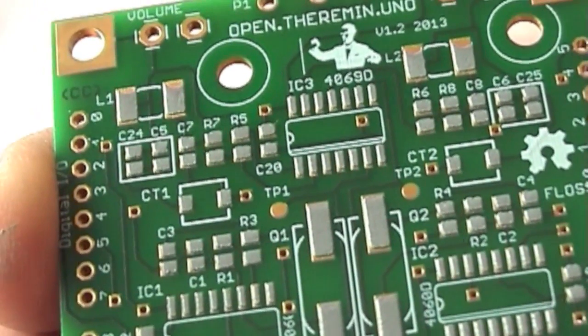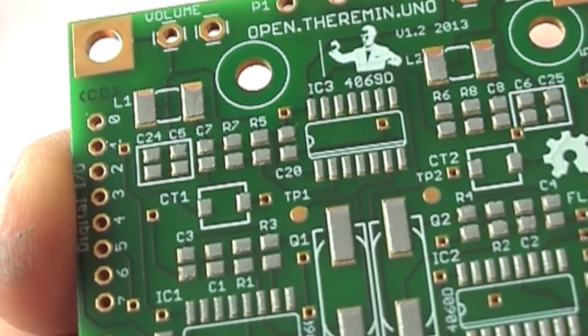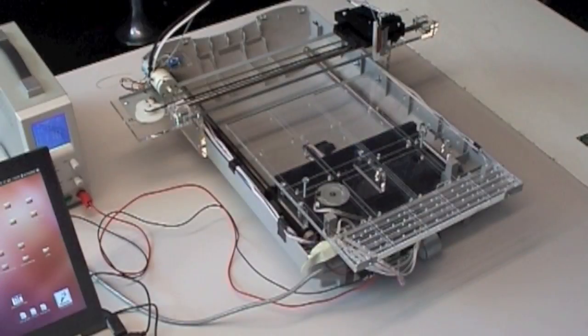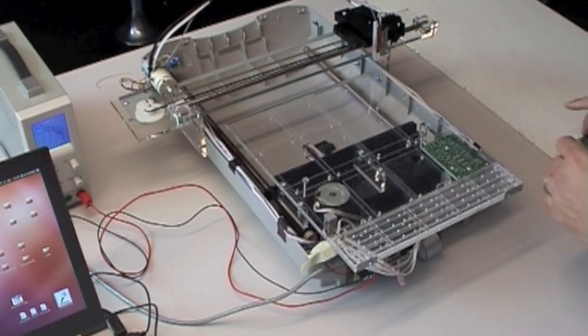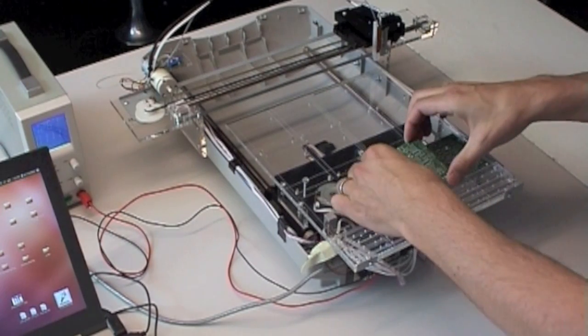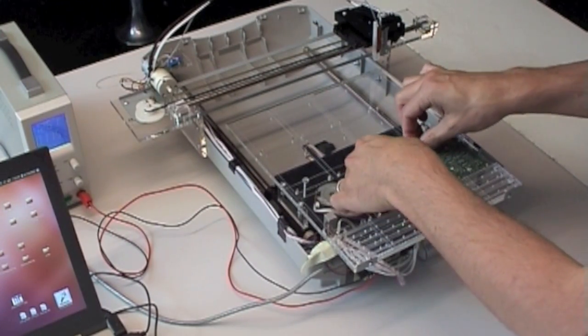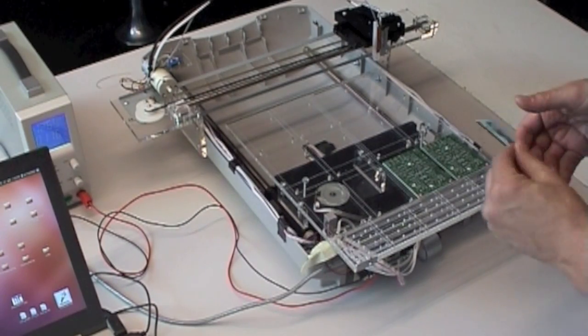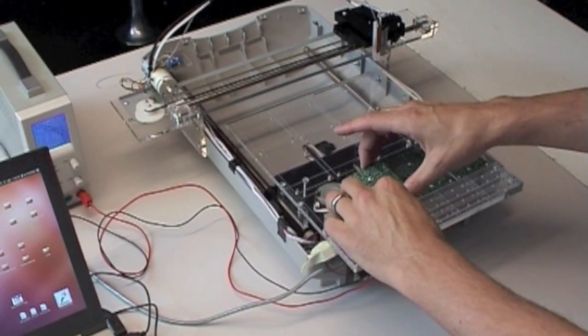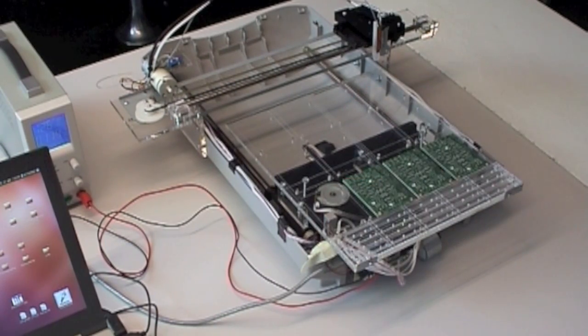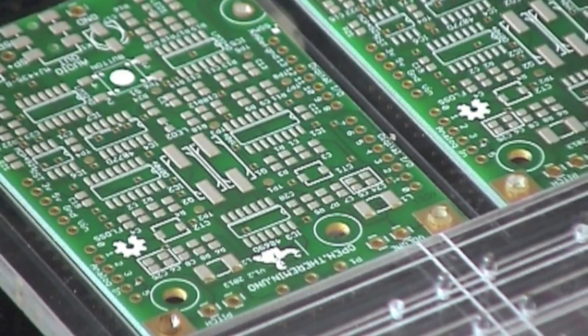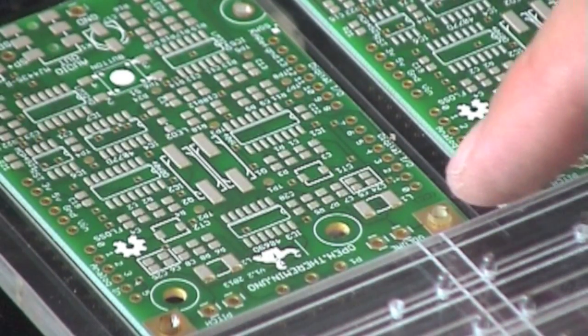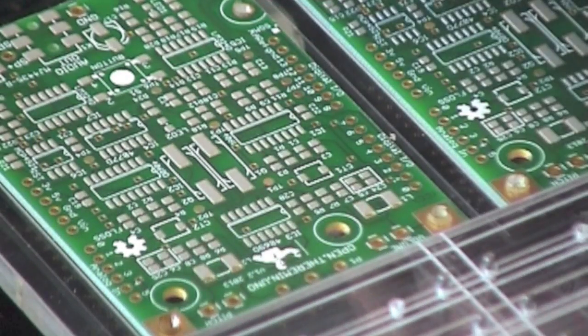This is what it looks like with the solder paste. Next I put all the boards on the pick and place robot. The boards are positioned by three small notches.